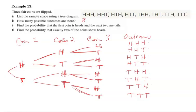Find the probability that the first coin is heads and the next two are tails. Well, there's only one option there where the first coin is heads and the next two are tails. So that probability is a 1 in 8 chance.